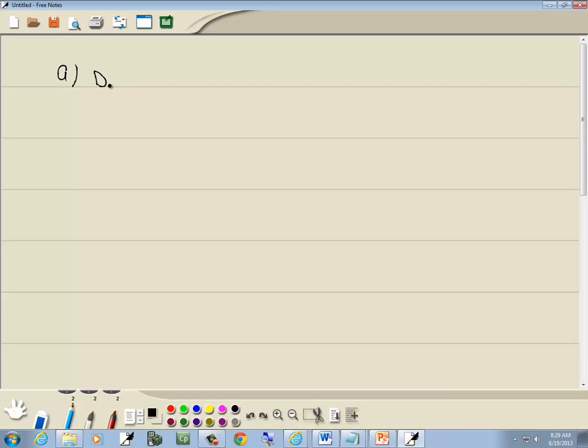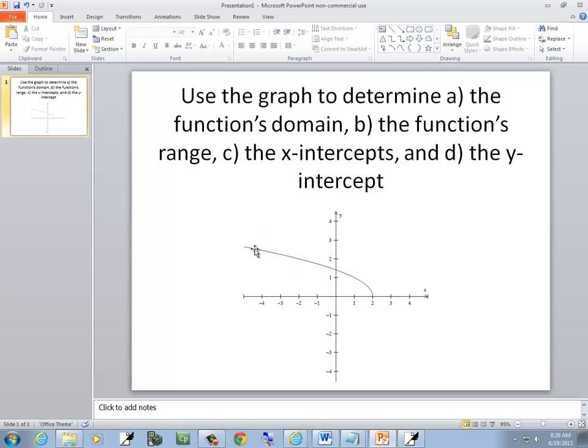So our domain - domain is your x-values where your graph exists. Well, this stops right here, but it actually keeps going forever. So as it keeps going forever this way, then the x-values go to negative infinity. Now at the rightmost part of the graph, it stops right here. It doesn't go any further. So it doesn't exist at x equals 3.